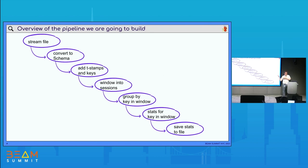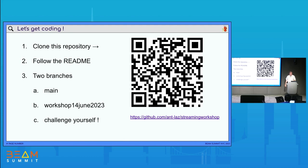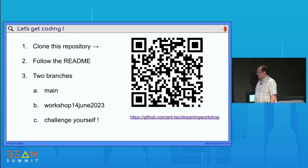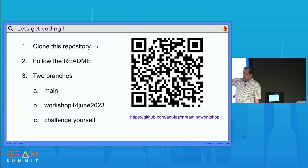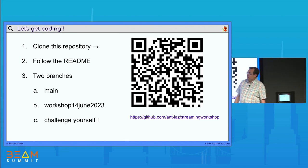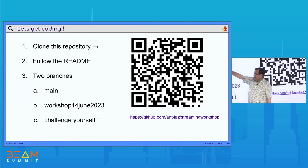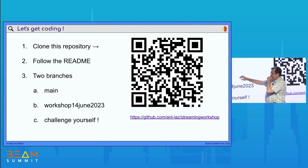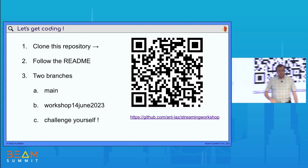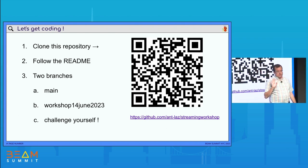You'll be able to see the output of your pipeline in the visualization system you saw at the beginning — the dashboard is already written, it's prepared. These are the instructions: clone the repo if you haven't yet, follow the readme. We will be doing step-by-step development. There are two branches: the main branch which has the solutions, and the workshop branch.